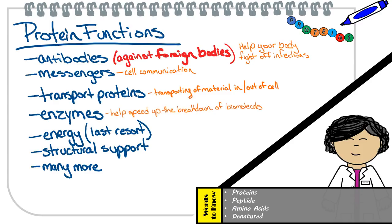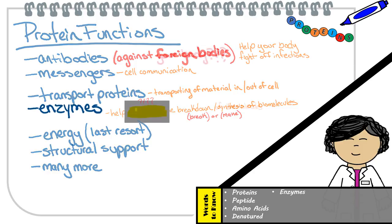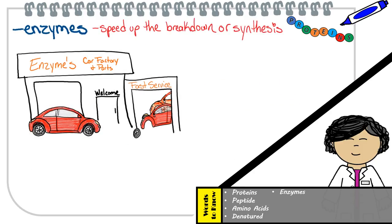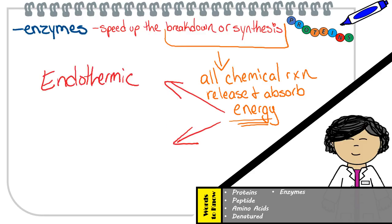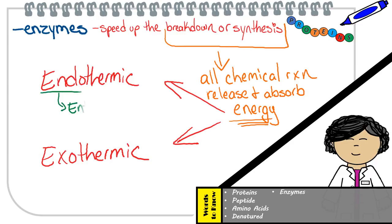As for enzymes, you need to understand that enzymes can actually help speed up the breakdown or synthesis of biomolecules — synthesis means to make. Enzymes are proteins that help speed up reactions; they don't actually break down or build biomolecules themselves. Keep in mind that all chemical reactions release and absorb energy. Reactions will vary between two scenarios: endothermic and exothermic, in which they relate to heat energy entering or exiting the reaction.